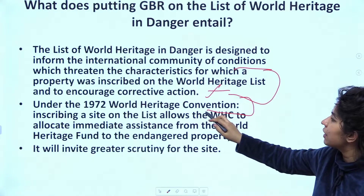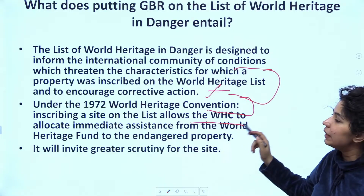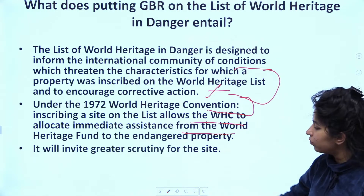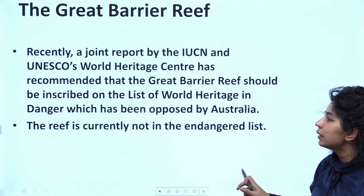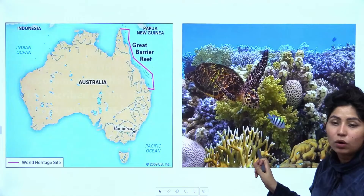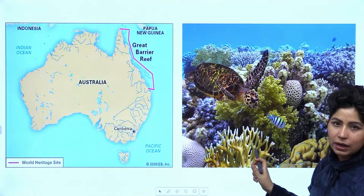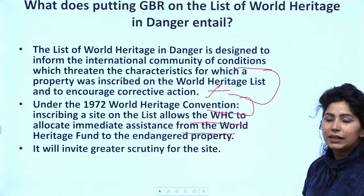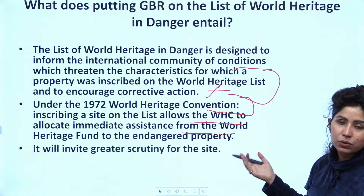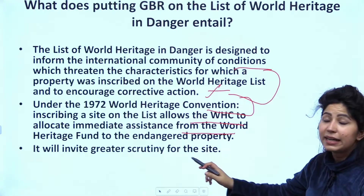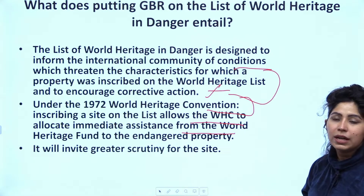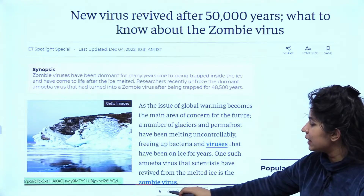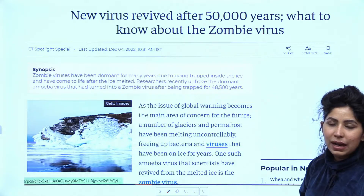Under the 1972 World Heritage Convention, inscribing a site on the list allows the World Heritage Committee to allocate immediate assistance from the World Heritage Fund to the endangered property. The Great Barrier Reef is not just a property of Australia — it belongs to all of mankind because our survival depends on it. If it gets the endangered category, budget allocation from the World Heritage Fund can happen and more efforts can be put towards saving it. It will also invite greater scrutiny for the site, which Australia may not like — that is why they are opposing this proposal.